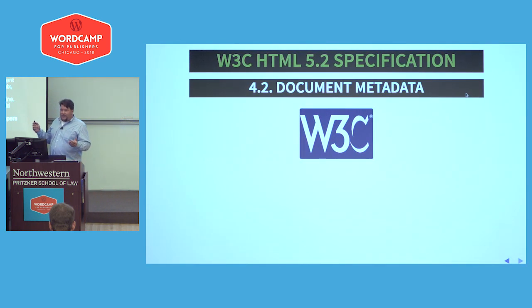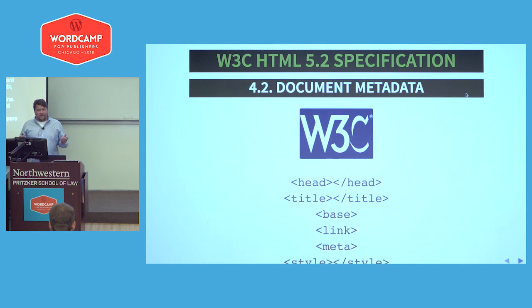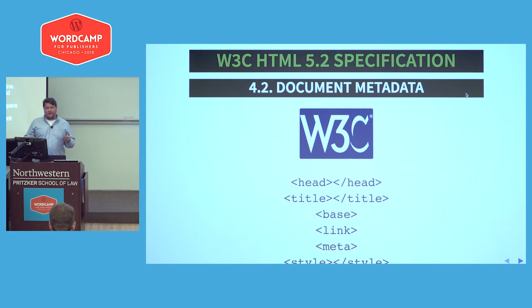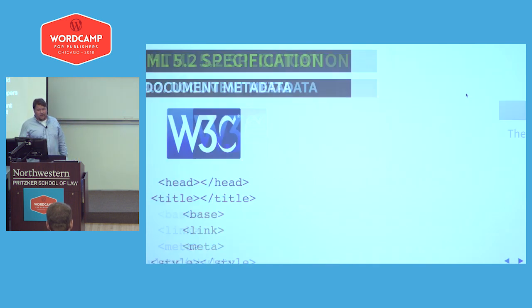The W3C specifies only six different types of metadata about documents in the head: the head tag, title, base, link, meta tag, and style tags.